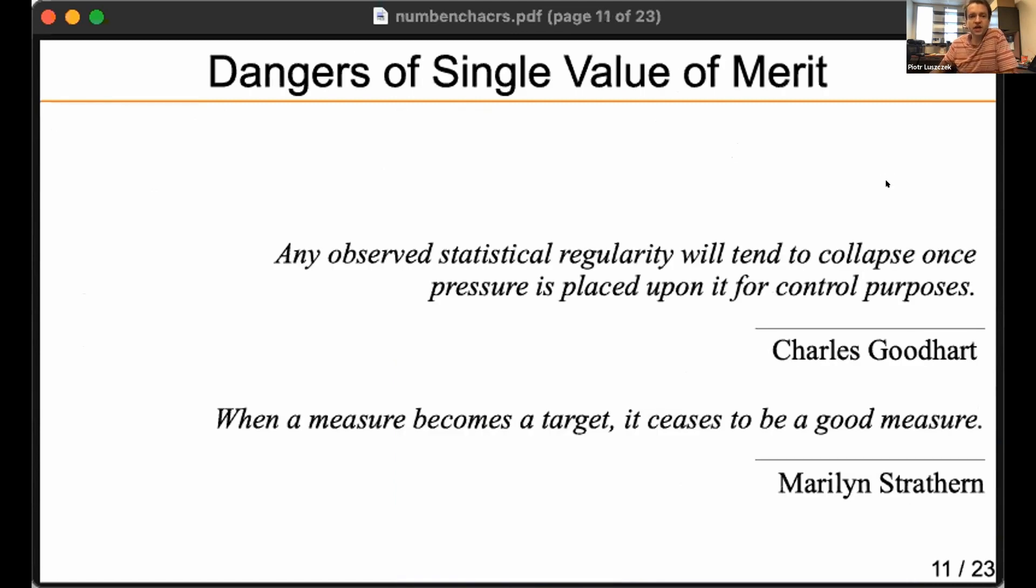The problem with benchmarking, focusing on one number, is something that machine learning now knows very well. It's called Goodhart's law: any observed statistical irregularity will tend to collapse once pressure is placed upon it for control purposes. Another way by Marilyn Strathern: when a measure becomes a target, it ceases to be a good measure.